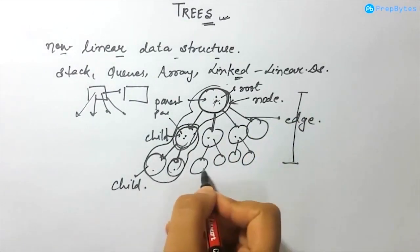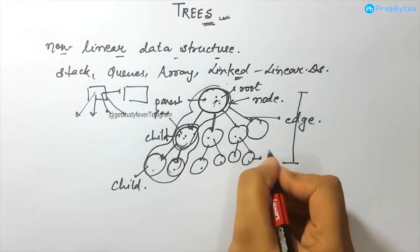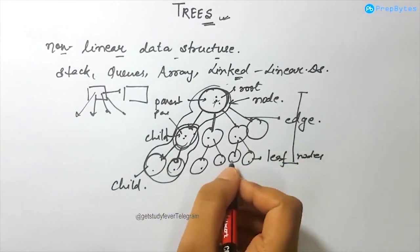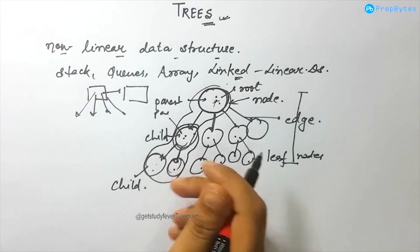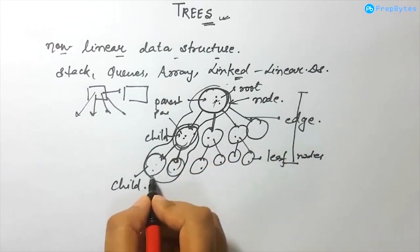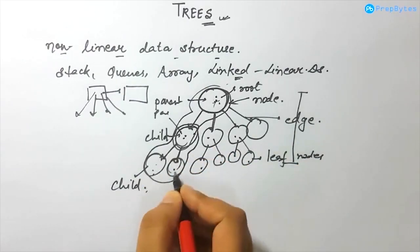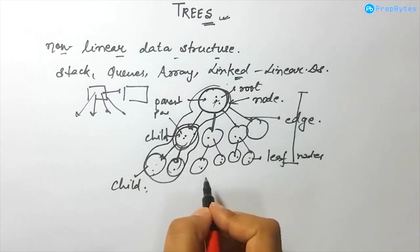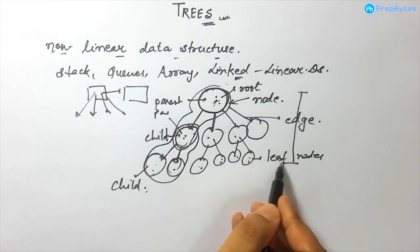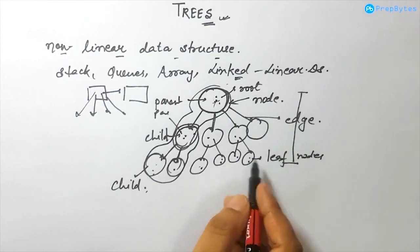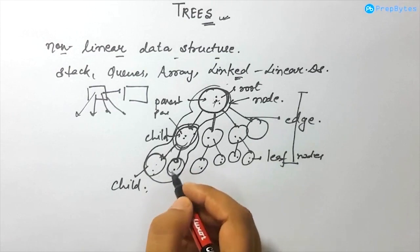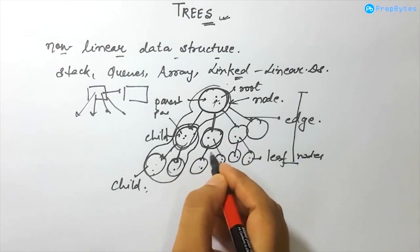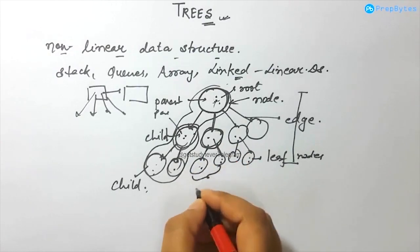These particular nodes at the bottom are known as leaf nodes. Any node which does not have any child is called a leaf node. As you can see, these particular nodes have no children. Children of the same parent are called siblings. So if a parent has two children, those two are called siblings.